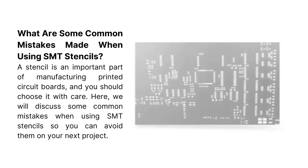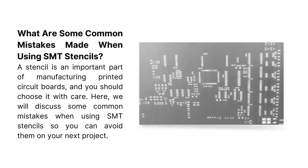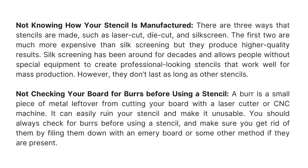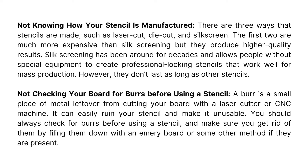Some common mistakes when using SMT stencils include not knowing how your stencil is manufactured. There are three ways stencils are made: laser cut, die cut, and silk screen. The first two are more expensive than silk screening but produce higher quality results. Silk screening has been around for decades and allows people without special equipment to create professional-looking stencils that work well for mass production. However, they don't last as long as other stencil types.